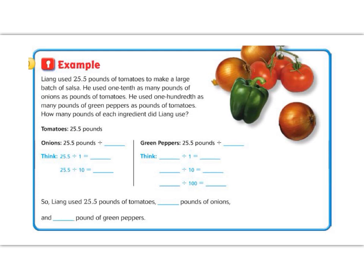So in this little table, we have the onions on one side and the green peppers on the other. And both of them are being compared to the tomatoes. So if you look, tomatoes is 25.5. And we have 25.5 divided by something. So if we look back up here, it says he used one-tenth as many pounds of onions. So if we're going to do one-tenth of, we're going to divide by 10.